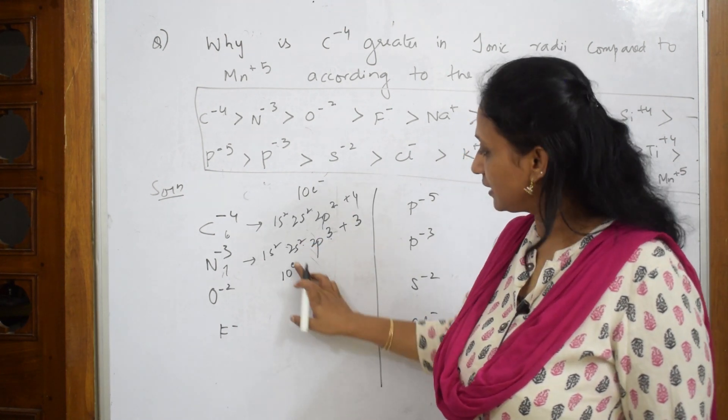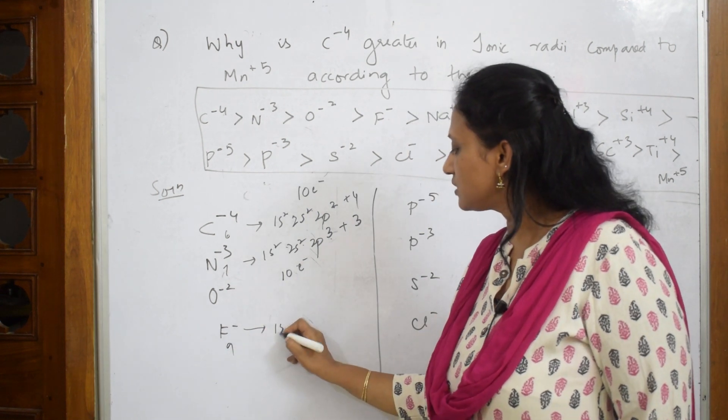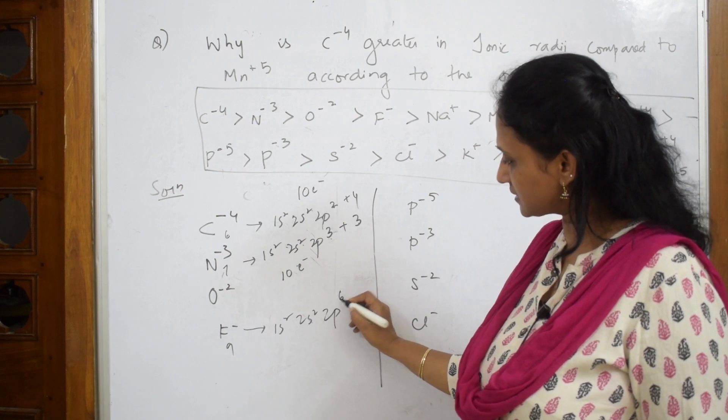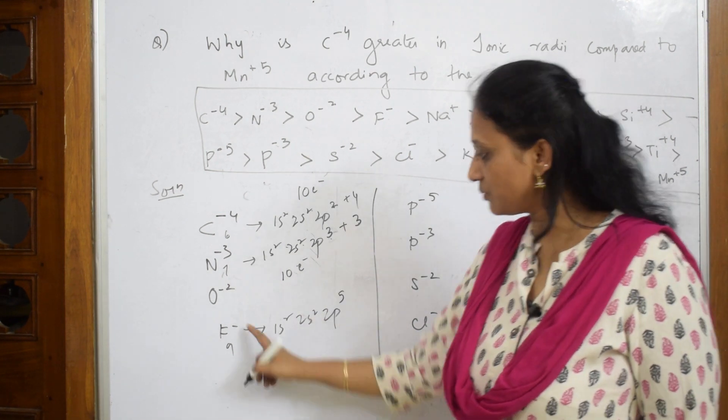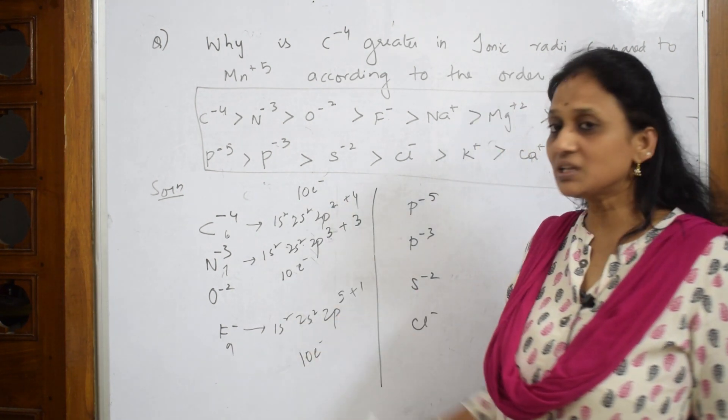Let's take one more example. Fluorine, atomic number 9, is 1s^2 2s^2 2p^5. Add one electron: 5 plus 1 is 6, 6 plus 4 is 10. Here are the 10 electrons.